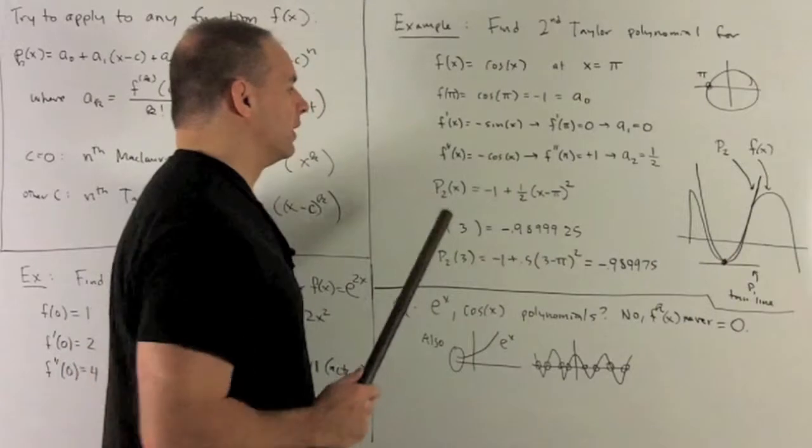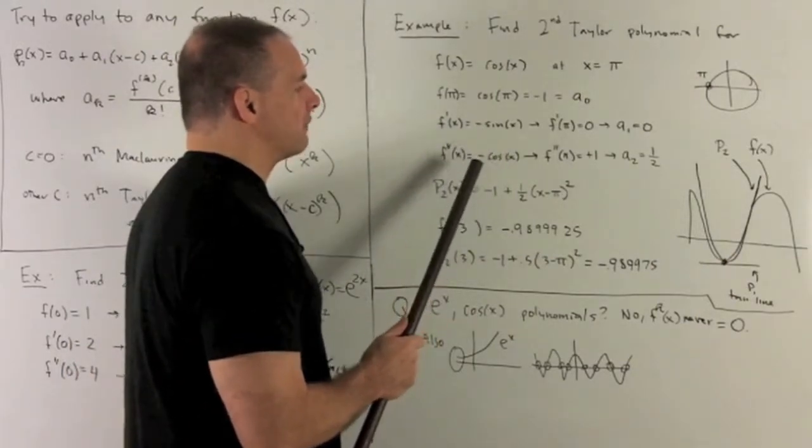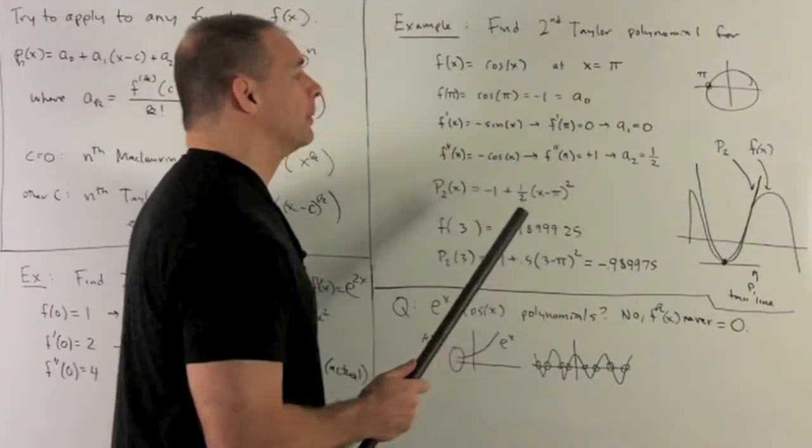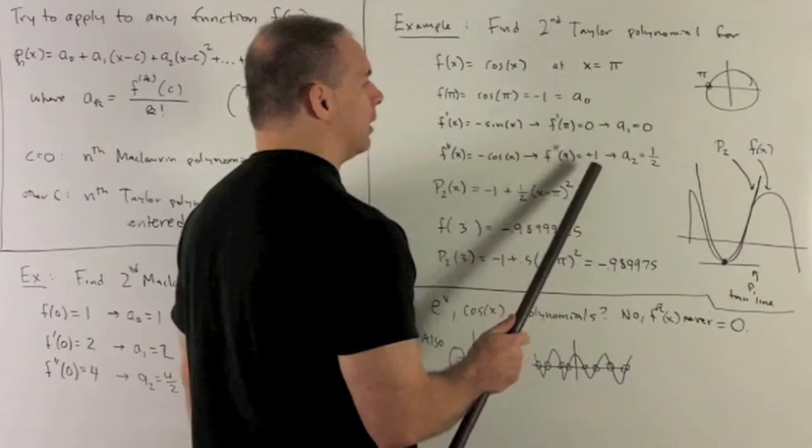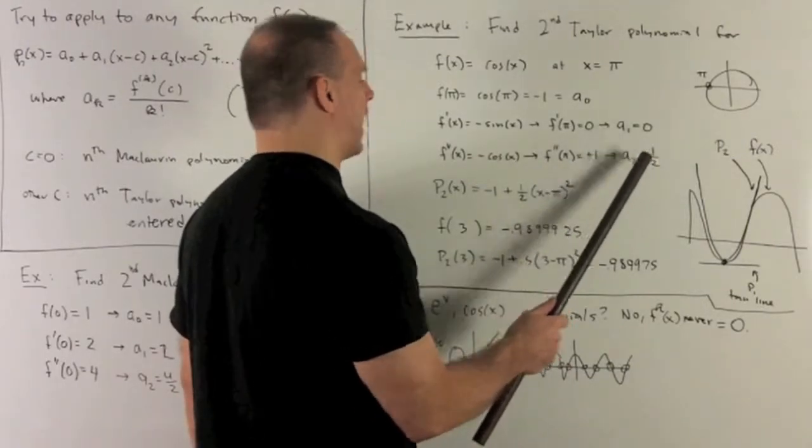Go for the second derivative. That's going to get us back to cosine x, but with a minus sign in front. Put our π into there, that's going to give me a plus 1. And then we're looking at a₂ equal to that 1 divided by 2 factorial, which is just going to be 2, so we get a half.